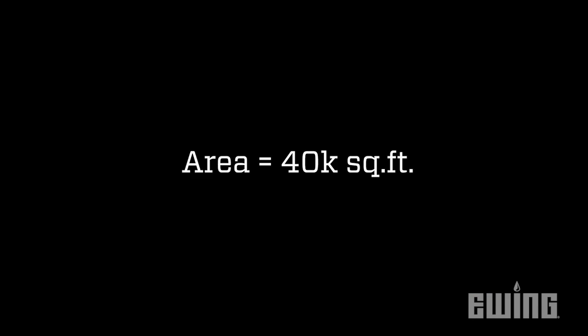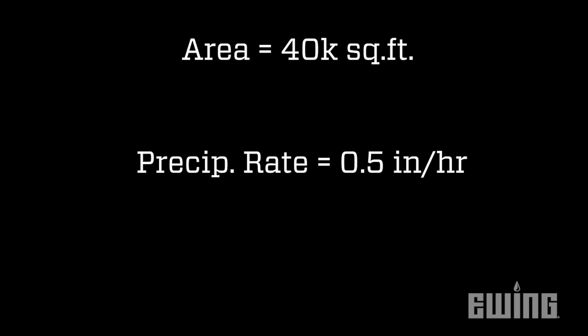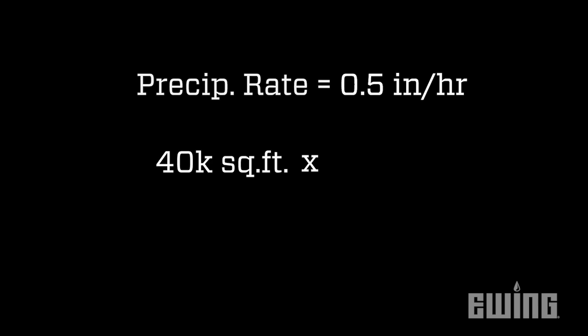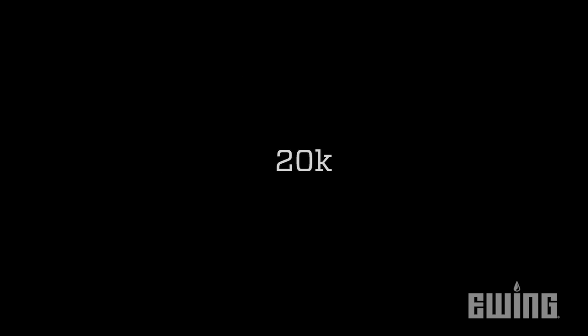Here's an example. The area of our property is 40,000 square feet and the precipitation rate of the head we're going to use is 0.5 inches per hour. Take the 40,000 square feet, multiply it by 0.5 inches per hour, then divide the result by 96.3 — a conversion factor that puts our units into gallons per minute. When we do this math, the result is 208 gallons per minute.